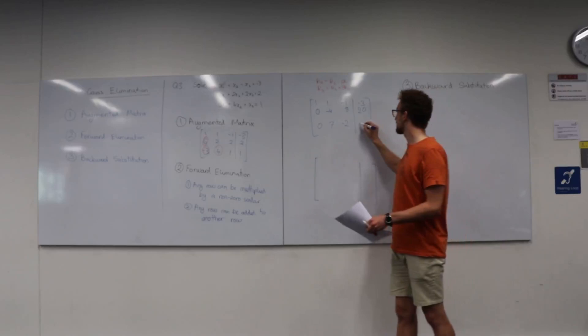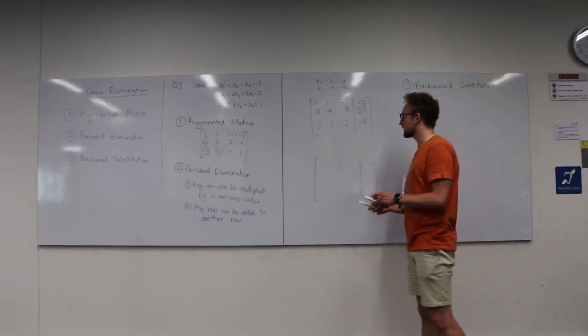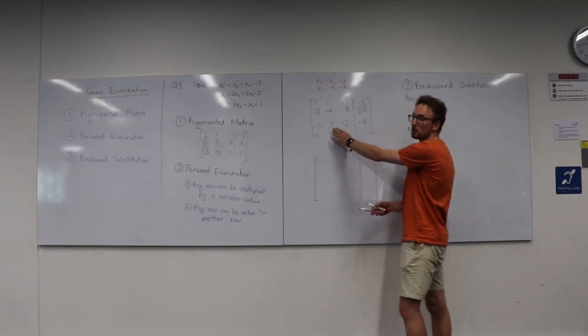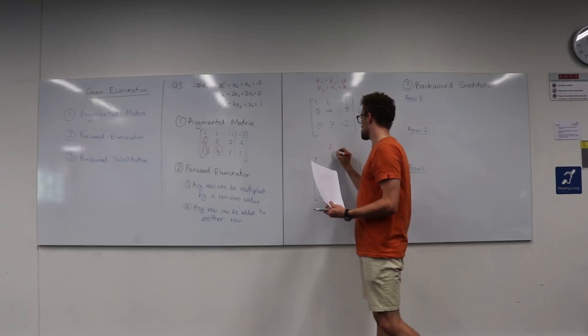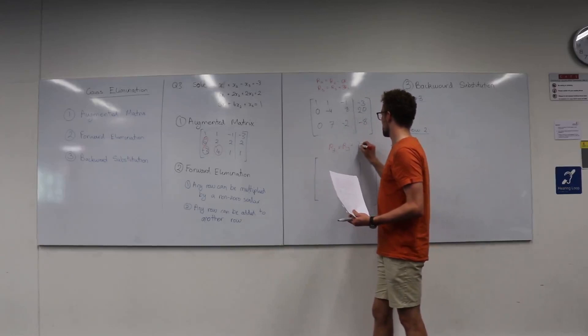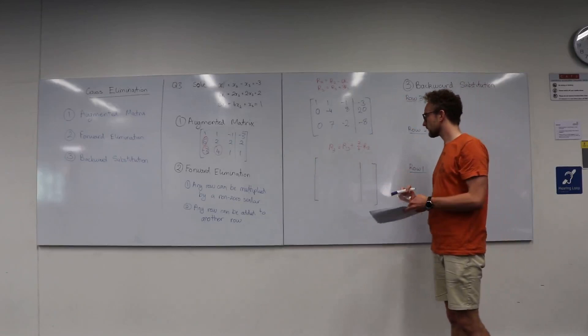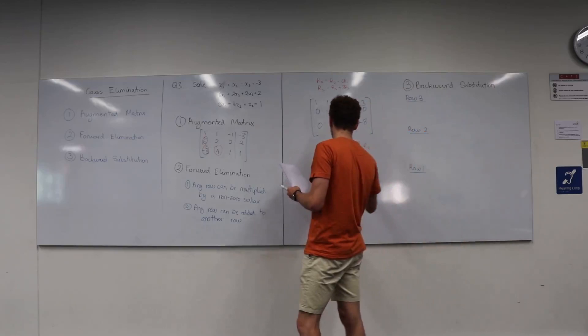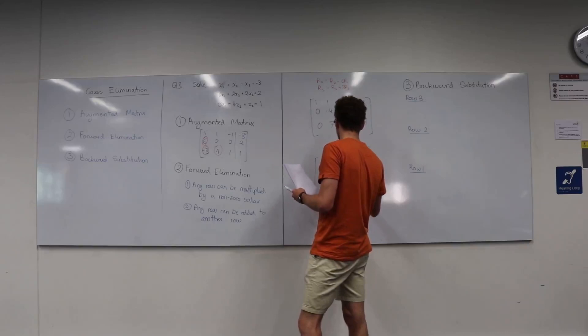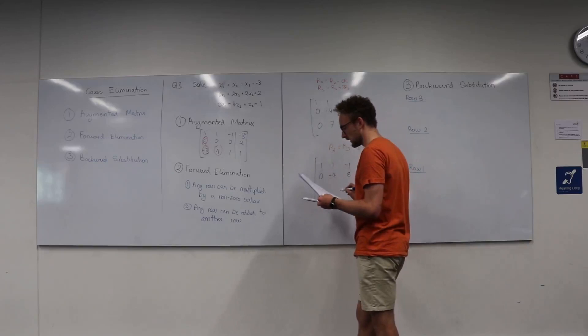So we've gotten rid of 2 of our elements, and we just have one more to go. Here we say R3 equals R3 plus (7/4) times row 2. Our first and second rows now remain unchanged: 1, 1, negative 1, negative 3; 0, negative 4, 8, 20. And we get 0, 0, 12, 27 in the last row. What we have here is what we call an upper triangular matrix.